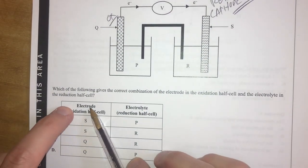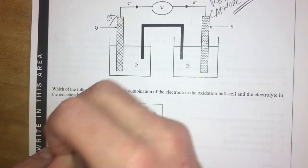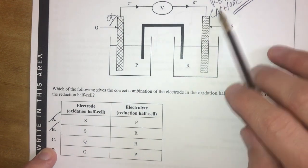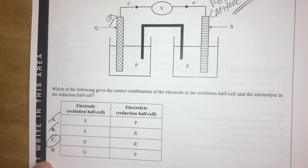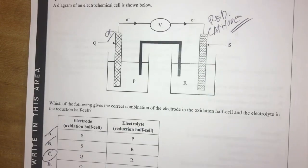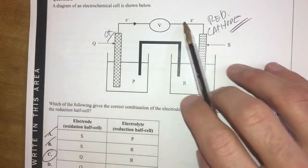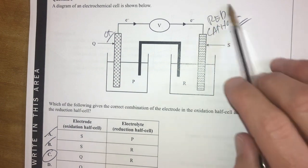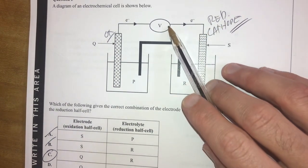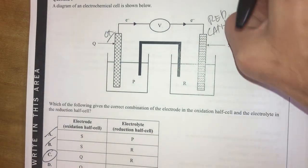So therefore, we can cross off A and B. And then my electrolyte in my reduction half cell would be R. So it's going to be C for question three, which is really good. Main thing here is identify one thing you can label, which is electrons flowing towards the cathode. So therefore, this is my reduction. Or reduction is gaining electrons. So you can see electrons are being gained here. So therefore, that's reduction. Another way of knowing that.